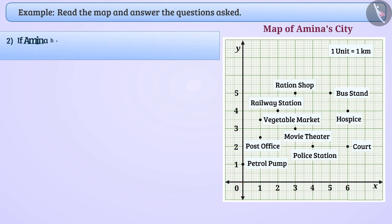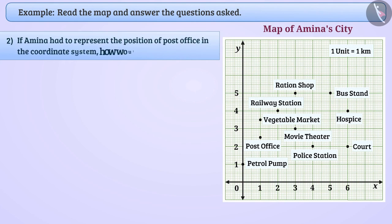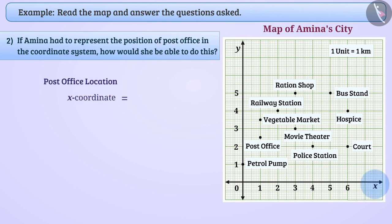If Amina had to represent the position of the post office in the coordinate system, how would she be able to do this? The location of the post office can be represented by x-coordinate 1 and y-coordinate 2.5. Hence, the position of the post office will be represented by (1, 2.5).